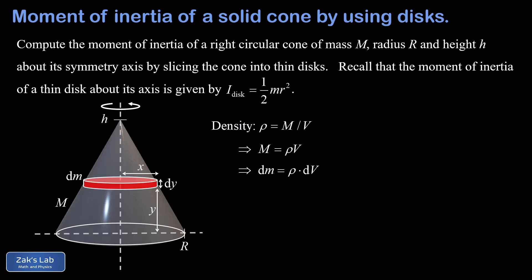Our goal is to write an expression for dm in terms of the variables x and y, then substitute that dm into our known formula for the moment of inertia of a disk to get a small moment of inertia contribution dI. Next we'll manipulate that expression entirely in terms of a single variable, and at that point we're ready to add up all the contributions with an integral. So we start by getting an expression for dm.